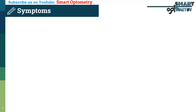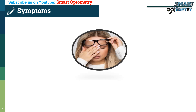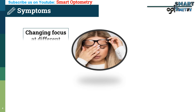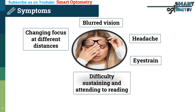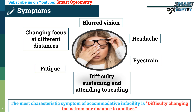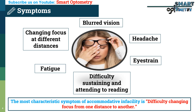Now let's see the symptoms of accommodative infacility. Most symptoms are associated with reading or other close work. Common complaints include difficulty changing focus from one distance to another, blurred vision, headache, eye strain, difficulty sustaining and attending to reading or other close work, and fatigue. The most characteristic symptom of accommodative infacility is difficulty changing focus from one distance to another.